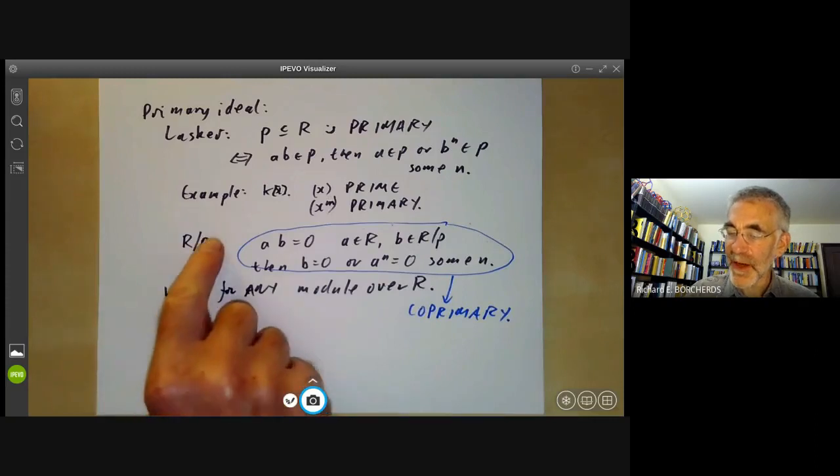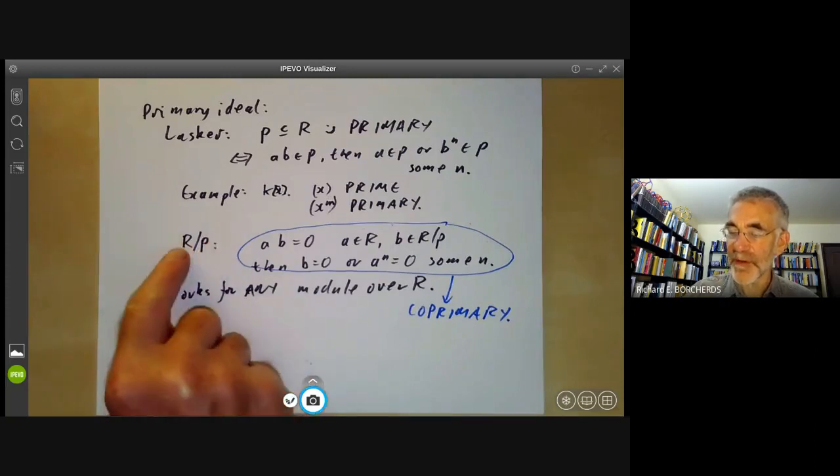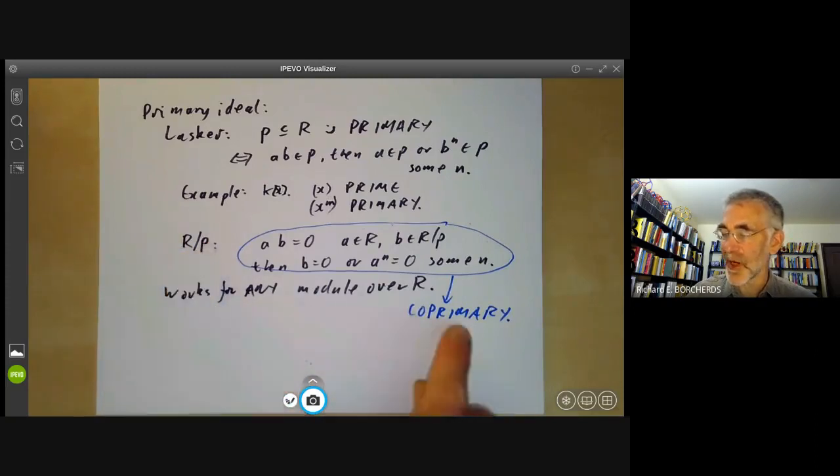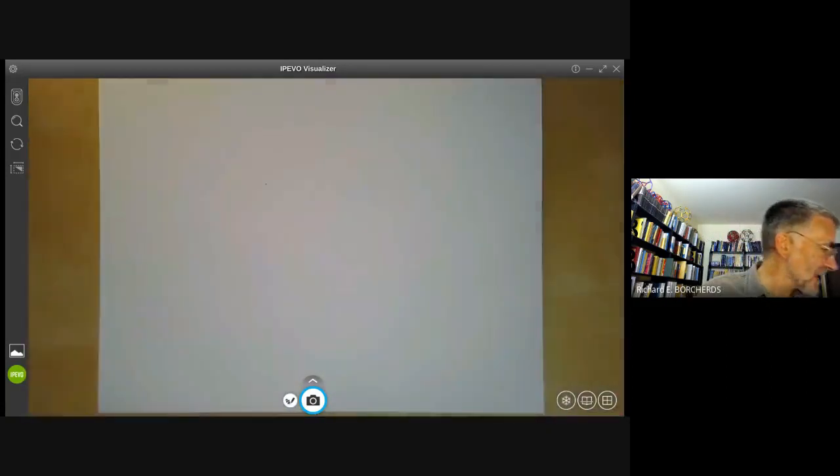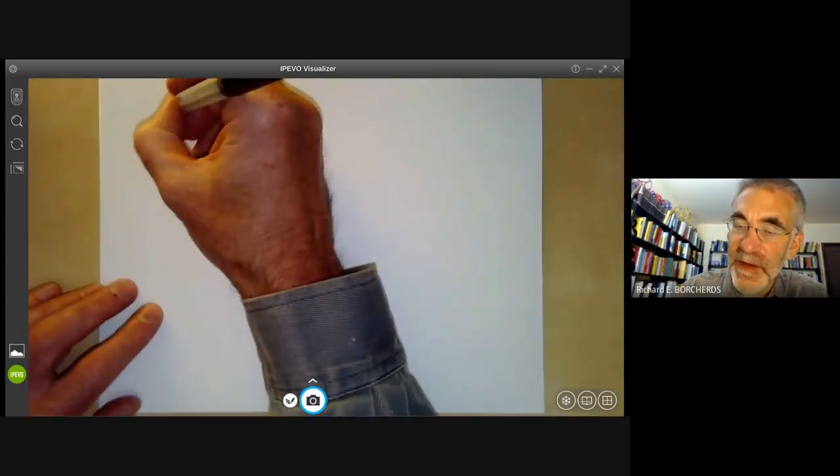For ideals in the ring, the ideal is primary if and only if the quotient by the ideal is co-primary, but co-primary works for arbitrary modules. Well, it turns out this definition isn't terribly convenient to work with. There's a more convenient definition. So here's an alternative definition.